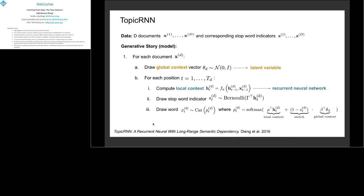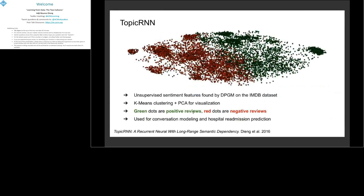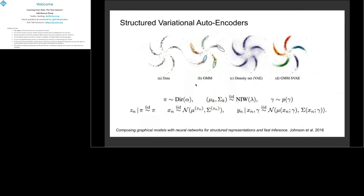This is a graphical model with latent variables combined with recurrent neural networks, and it has been useful for unsupervised document representation learning, sentiment analysis, conversation modeling, and hospital readmission prediction. The reason I go through these examples is to show that when you use elements of both cultures, you can end up with approaches that achieve more than what either approach would give you individually.